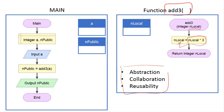Keep this word in mind: caller. Back to the main logic — what we have is one variable named a, and another variable npublic. That is the meaning of npublic and nlocal, which I will explain later. The value of variable a comes from the user input block. And the variable npublic is going to be assigned by calling a function. Here is the caller, right here.